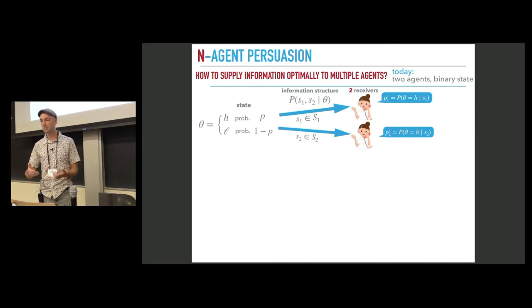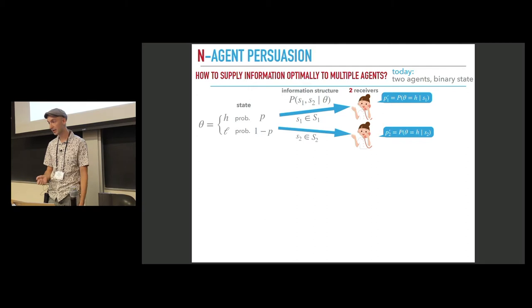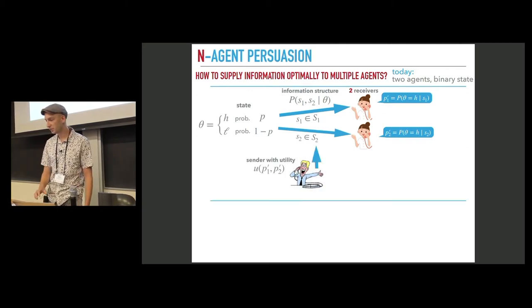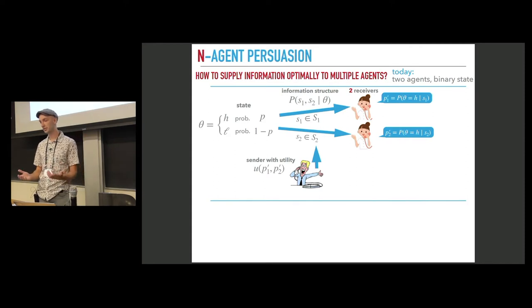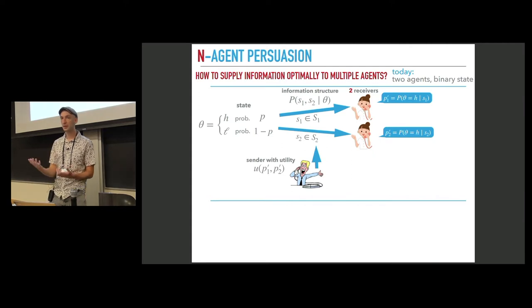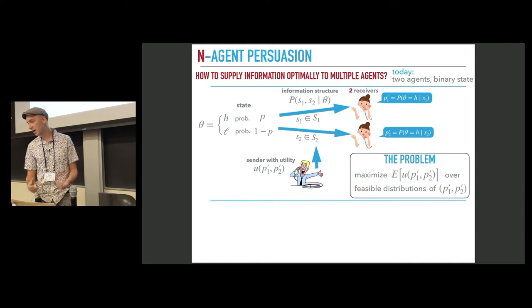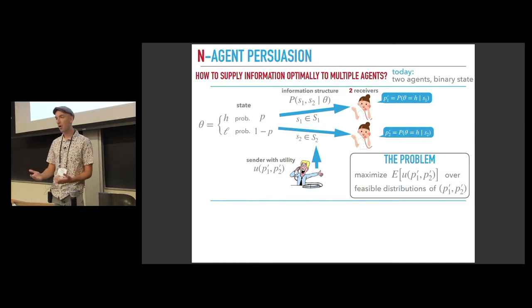These posterior beliefs are random variables by themselves because they depend on randomness in signals. We have another party, an informed sender who observes the realization of the state and is free to choose the information structure. He has a utility function that depends on the pair of induced beliefs. His goal is to maximize the expected utility over the information structures.